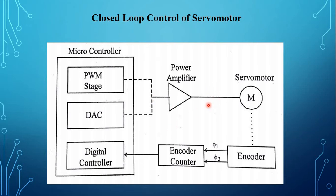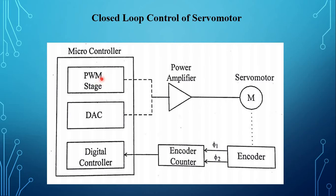In a closed loop servo motor control, usually a 16-bit high-end microcontroller and external logic circuits are used. This diagram shows the closed loop controller of servo motor. This diagram consists of an encoder counter, a microcontroller, a digital to analog converter, and a power amplifier. The DAC can be handled by a conversion DAC or by using microcontroller pulse width modulation (PWM). In either case, the output signal is fed to a power stage which translates the analog signal into usable voltages and currents to drive the motor.